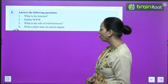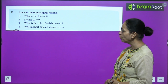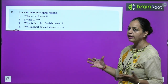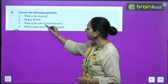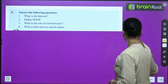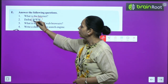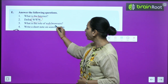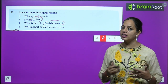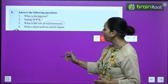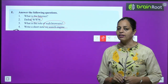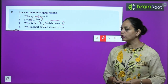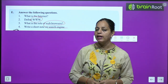Answer the following questions. What is the internet? It is the connection of millions of computer networks all over the world. Define WWW: it stands for World Wide Web — a collection of web pages connected by hyperlinks. What is the role of a web browser? It is software used to access the internet and websites. Write a short note on search engines: a search engine like Google is used for getting information on the internet.